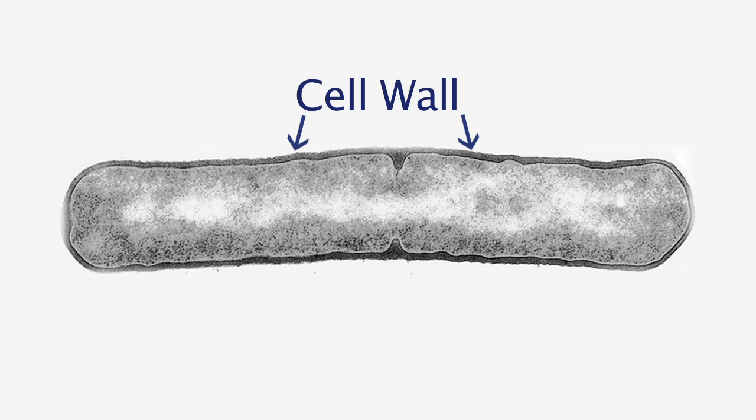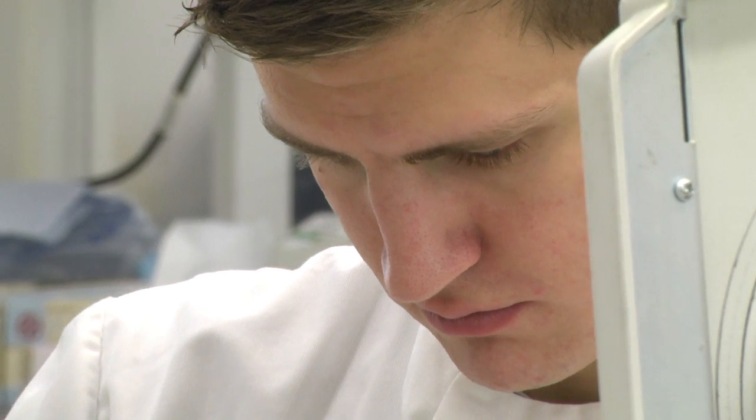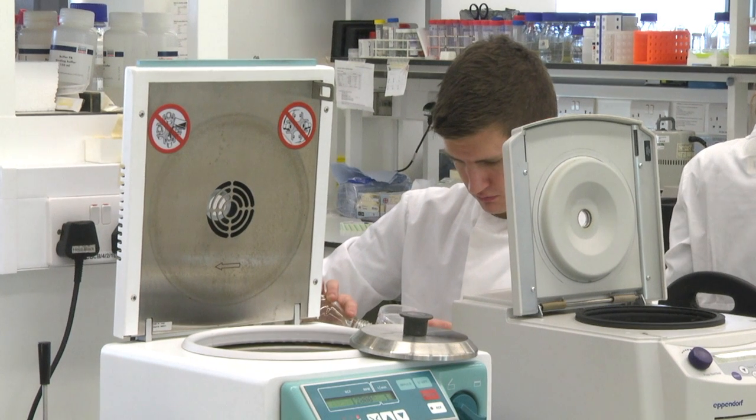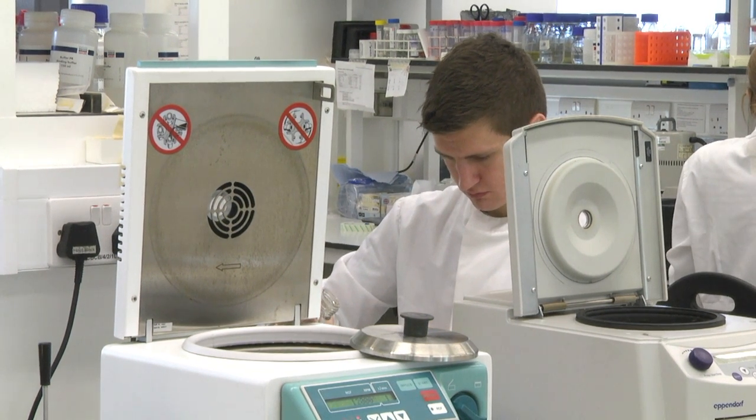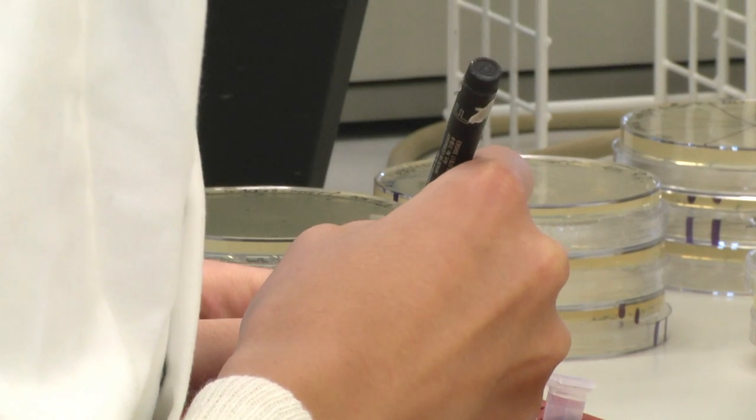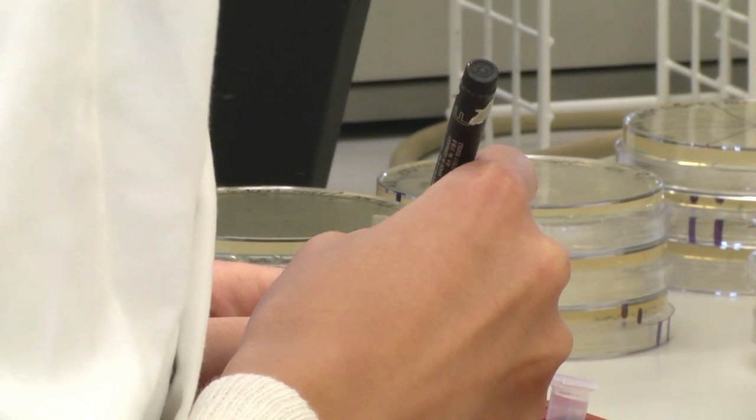One of the questions that we've become very interested in recently is how did cells grow and divide before the cell wall was invented. We've approached this by studying very curious variants of bacteria called L-forms that will grow in a complete absence of cell wall. We decided to study L-form biology using our favourite experimental organism, Bacillus subtilis.